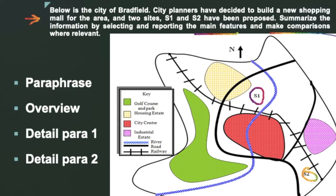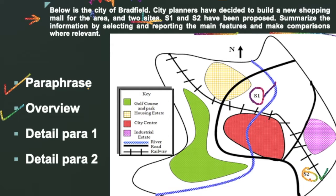It is simpler when you have two maps given to you — you can say what was there and what changed. With a single map it becomes slightly more difficult to summarize properly. The first sentence is the paraphrased version of the question. So, for example: 'The given map illustrates plans for two possible sites' — using words like 'two probable sites for a shopping mall in the city of Bradville.' For the overview, look at where the sites are located — S1 is in the north and S2 is more towards the south and eastern part.